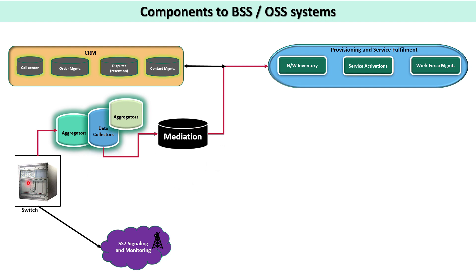In the switch there is a cutoff — after every 5, 15, or 30 minutes — based on the load of that particular switch. Telecom operators define the cutoff of the switch, and based on that the CDRs are taken from the switch and processed to mediation. In between, data collectors and aggregators collect the CDRs when a cutoff happens.